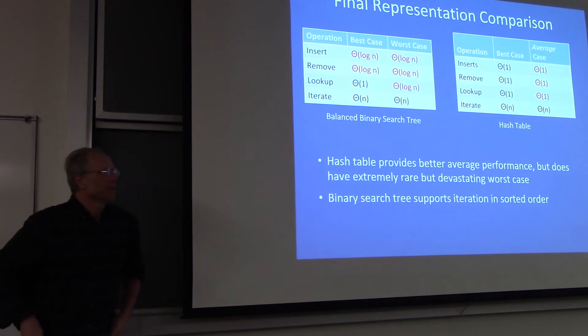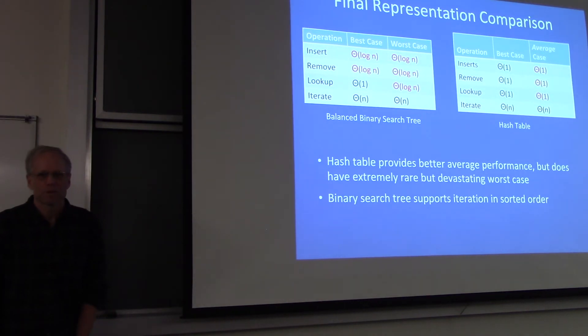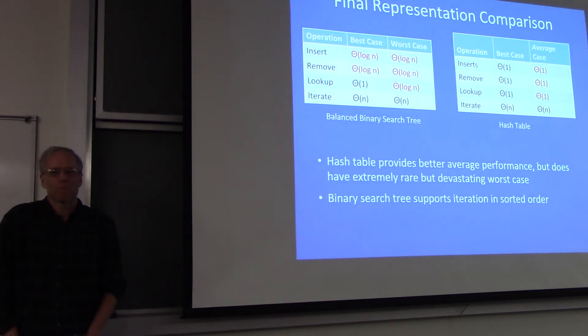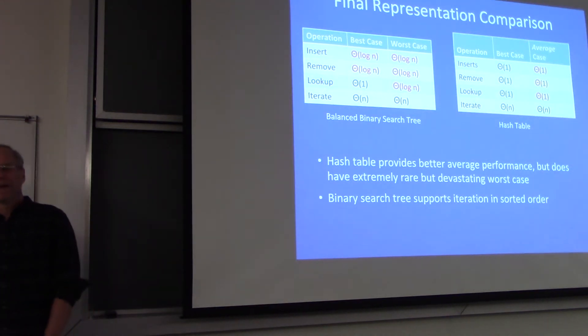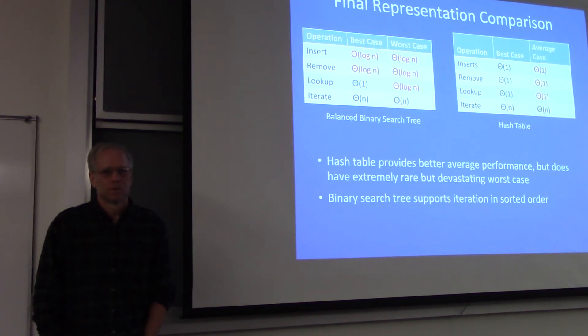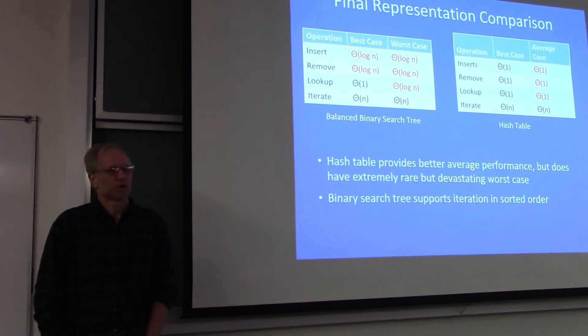So it may be expensive to hash something. You can always hash it. There are things which hash functions are not built into the language. And it may be expensive to hash. But you can't use a binary search tree for everything either, right? You have to be able to compare things.